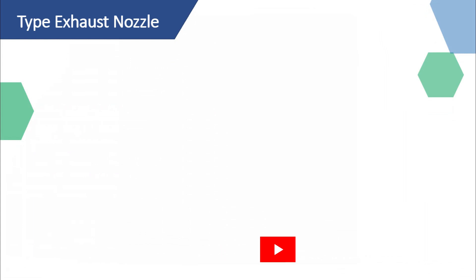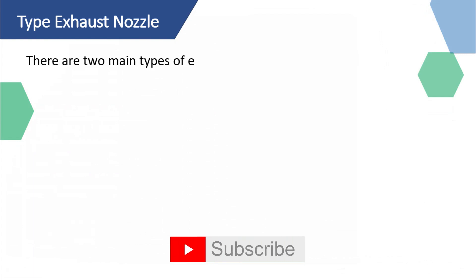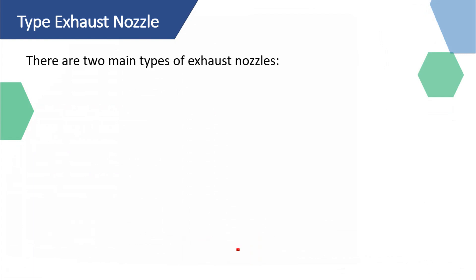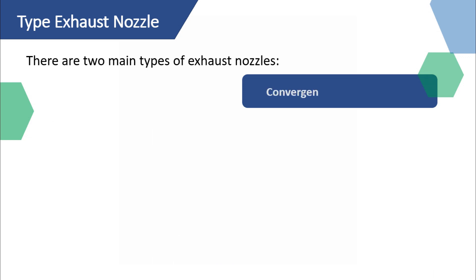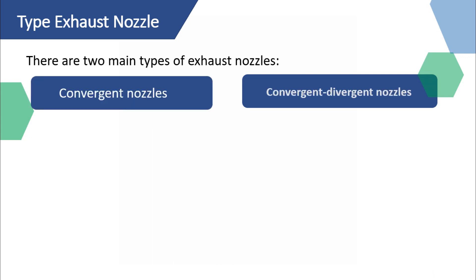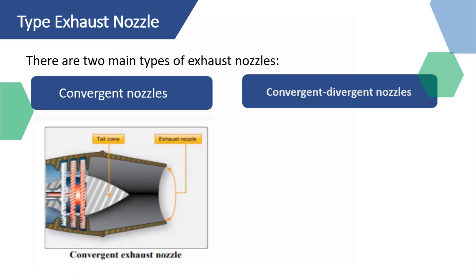Key components of the exhaust section include the exhaust cone, the tailpipe, and the exhaust or jet nozzle. There are two primary types of exhaust nozzles: convergent nozzles and convergent-divergent nozzles.